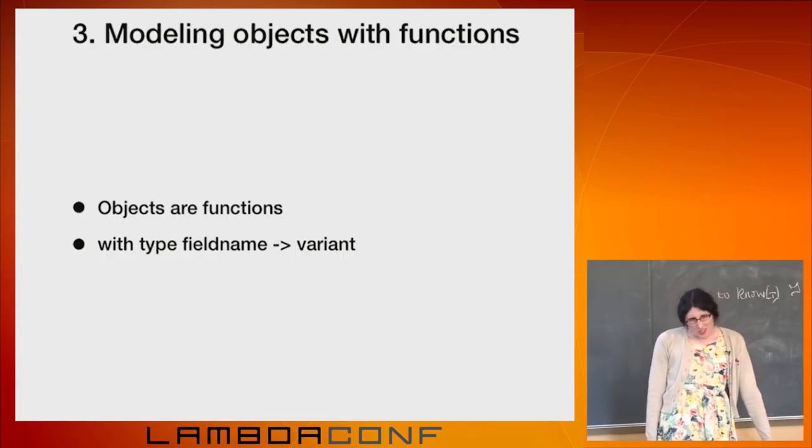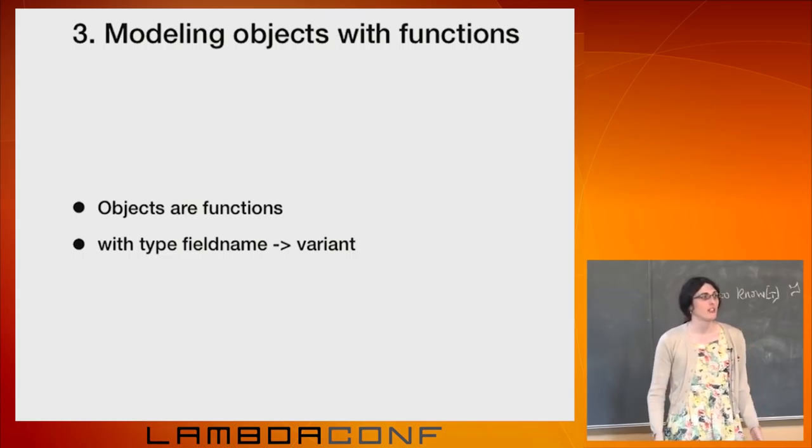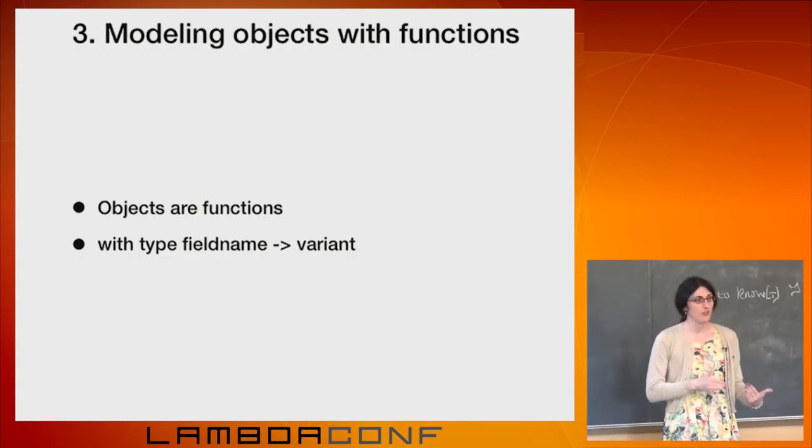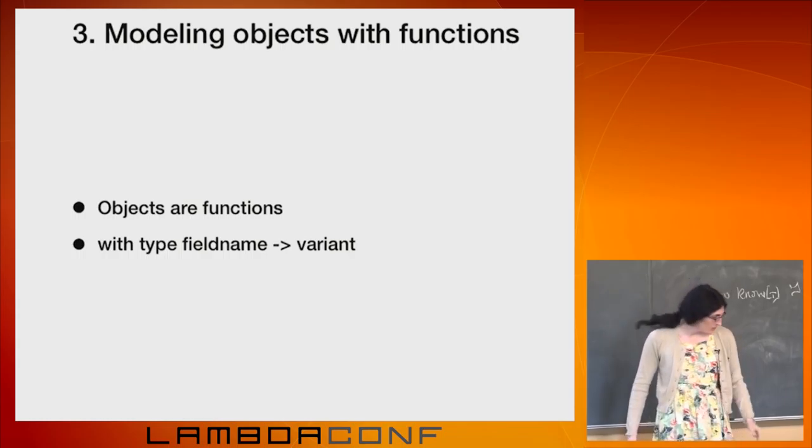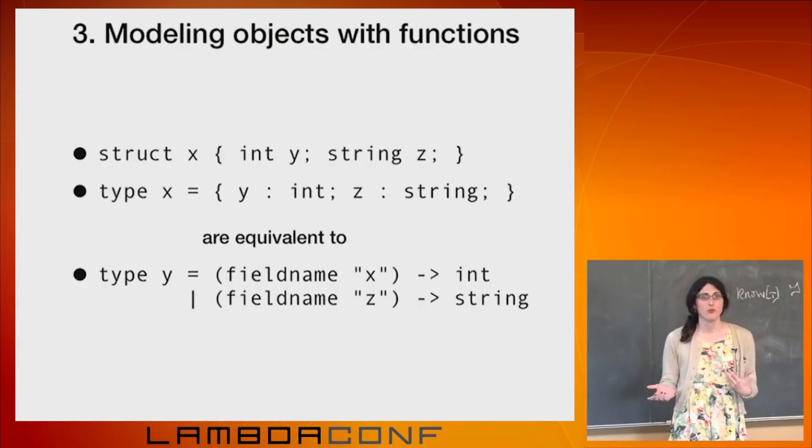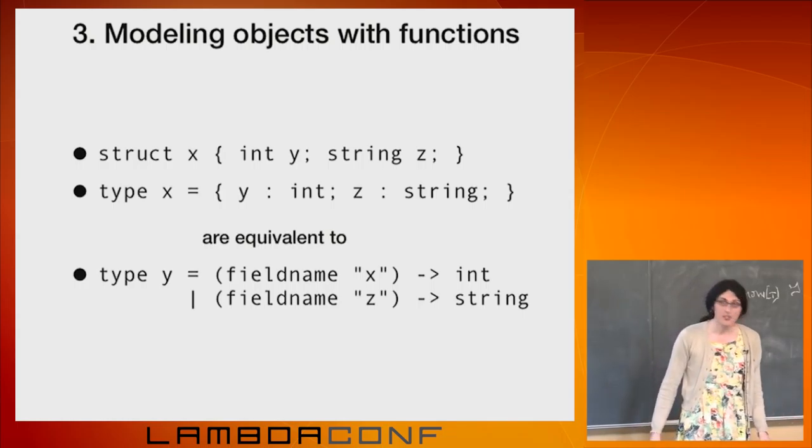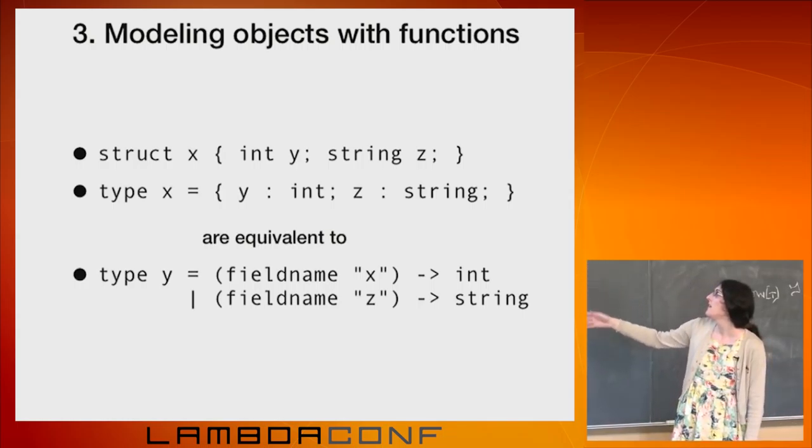A third idea, which kind of follows from this one, which seems a little more unique, but I like the idea of a language where objects and functions are the same thing. Because the way I look at it, an object is just a map from field names to values. And you can actually write out a type signature for it. If you think of the object as a map from field names to values, and if it's a map, that means it's a function as a domain and a codomain.